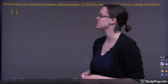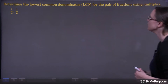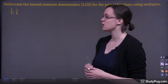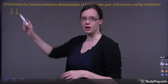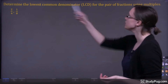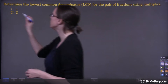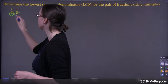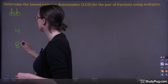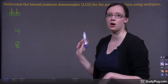Let's take a look at this question: determine the lowest common denominator for the pair of fractions using multiples. Here are our two fractions. What we're looking for is the lowest common denominator. We know these are our denominators: 4 and 8. So we'll write those out. Our denominators are 4 and 8.